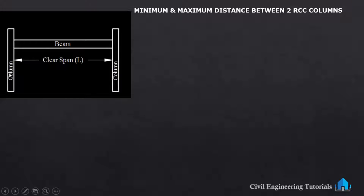Here, this is one RCC column and this is another RCC column, and this is the column-to-column distance, meaning the clear span or length. We will discuss about this length — the distance between two columns. Here I am not talking about high-rise buildings, apartments, or commercial buildings; I am talking about residential buildings.